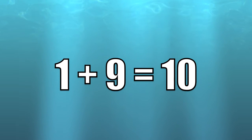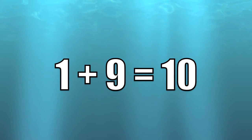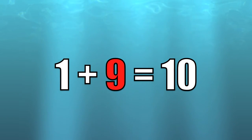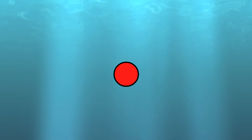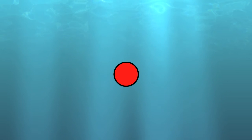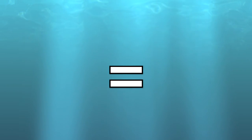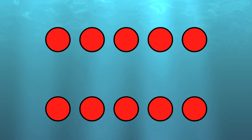One plus nine equals ten. One circle plus nine circles equals ten circles.